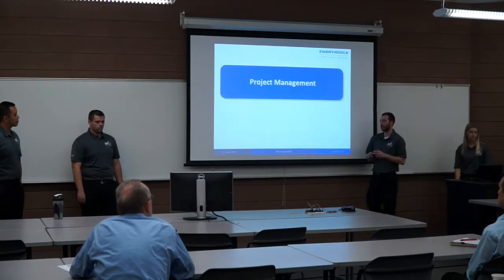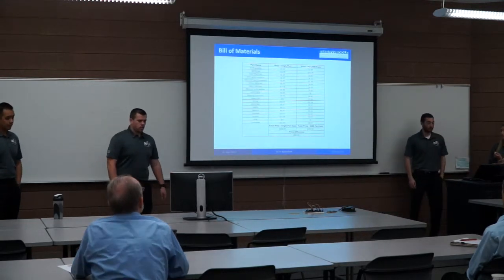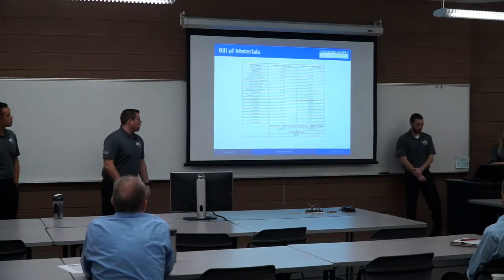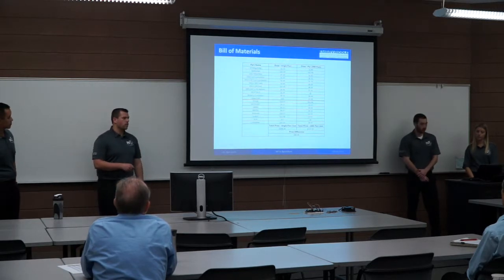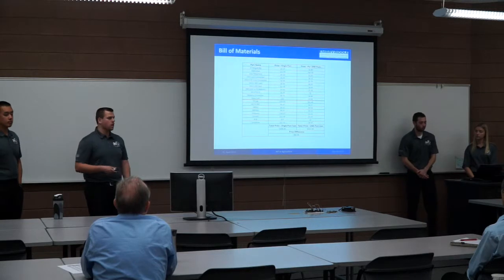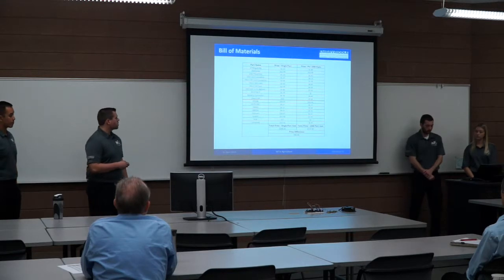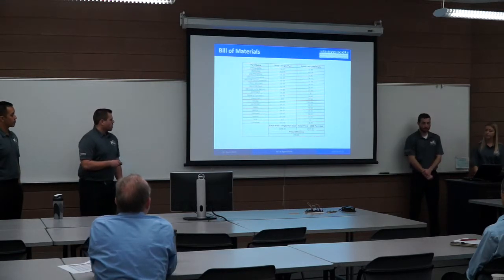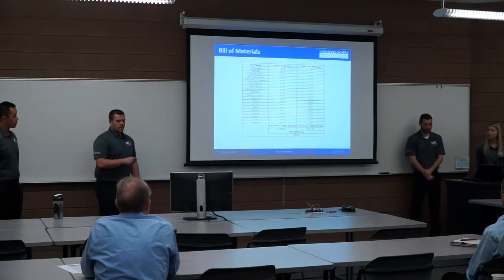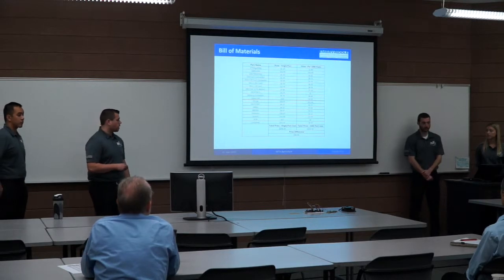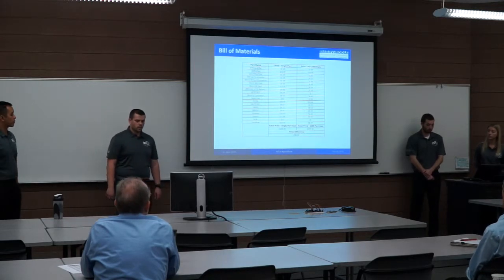Going over the bill of materials, we have two columns — one for single part costs and one for pricing per 1,000 parts for all production components. We have a total cost of about $168 for single part costing and $119 for 1,000-part quantity pricing, giving us about a $48 difference per unit.